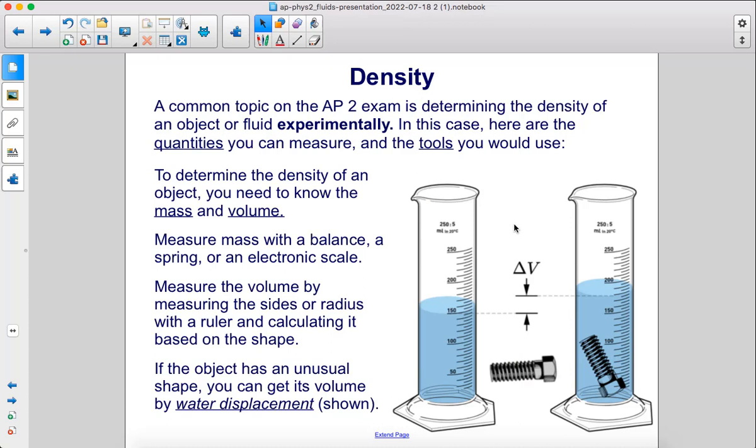A common topic on the AP2 exam is determining the density of an object or fluid experimentally. In this case, here are the quantities you can measure and the tools you would use. To determine the density of an object, you need to know the mass and volume. You can measure mass with a balance, a spring, or an electronic scale. You can measure the volume by measuring the sides or radius with a ruler and calculating it based on the shape. However, if the object has an unusual shape, you can get its volume by water displacement.